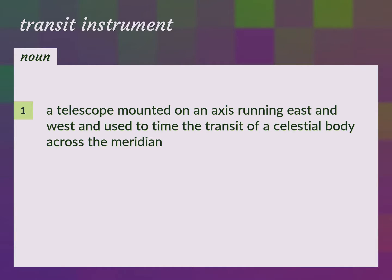A telescope mounted on an axis running east and west and used to time the transit of a celestial body across the meridian.